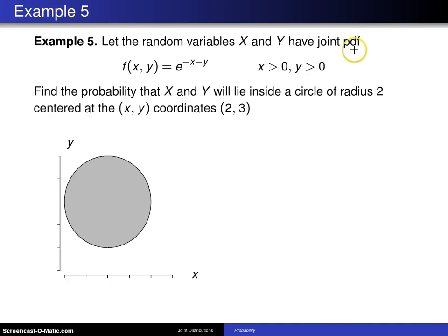Let the random variables x and y have joint pdf f of x, y equals e to the minus x minus y for x greater than 0 and y greater than 0. So right away you can see the support here is the first quadrant.